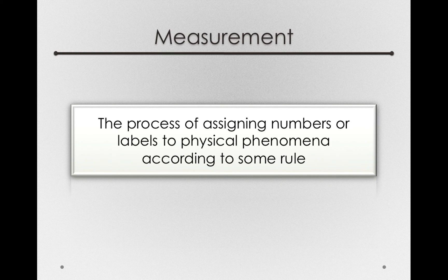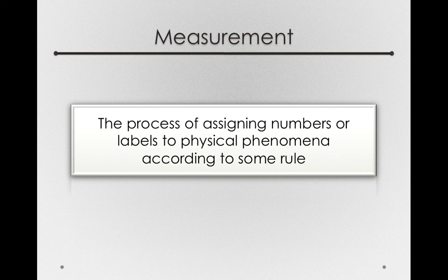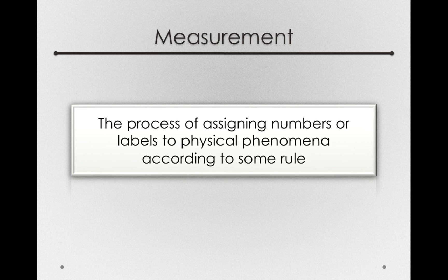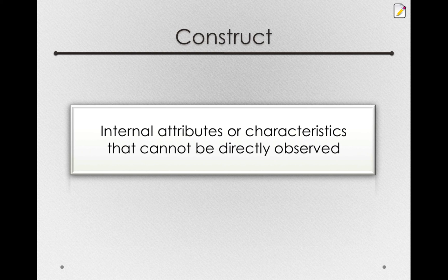For physical phenomena, it's usually pretty easy for us to agree, but for a wide class of phenomena, there isn't a single physical observation that would give us access to measuring the phenomena itself. These phenomena we refer to as constructs, or internal attributes or characteristics that cannot be directly observed.